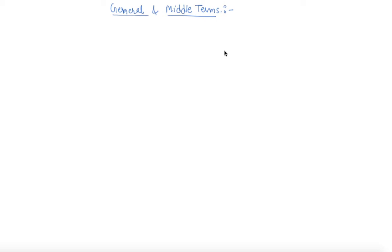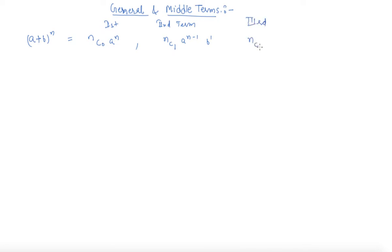As you have seen in my previous lectures, in the expansion of (a + b) raised to power n, the first term is nC0 · a raised to power n, the second term is nC1 · a raised to power n minus 1 · b raised to power 1, and the third term is nC2 · a raised to power n minus 2 · b raised to power 2. So the coefficients are nC0, nC1, and nC2 respectively.